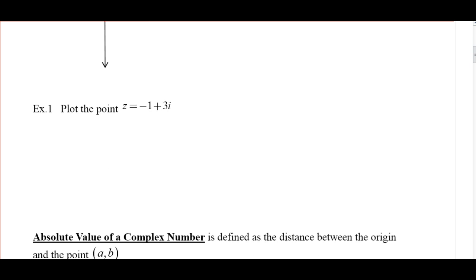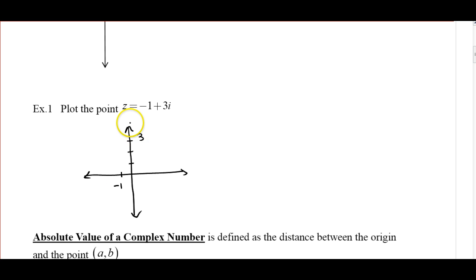A quick simple example: plot the point z = -1 + 3i. We've got our complex plane axes, and we're going to graph negative 1 on the real axis and 3 on the imaginary axis. The point is at (-1, 3), which represents the complex number -1 + 3i.